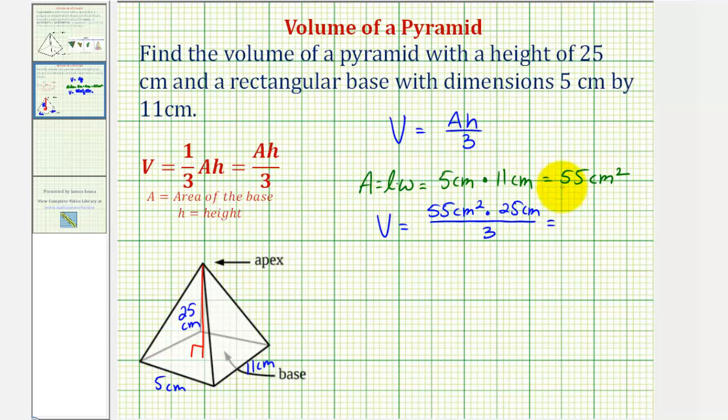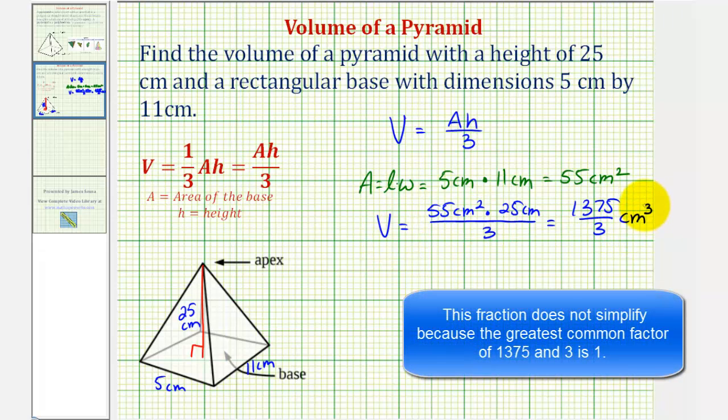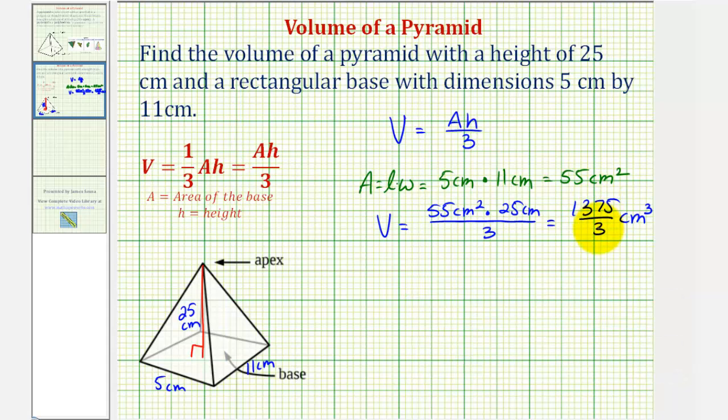So the volume would be 1,375 divided by 3 cubic centimeters. Notice how by leaving the units in our formula, we can see why the units must be cubic units. This is our exact volume, but let's represent this in a couple of different ways. First, let's convert this improper fraction to a mixed number.